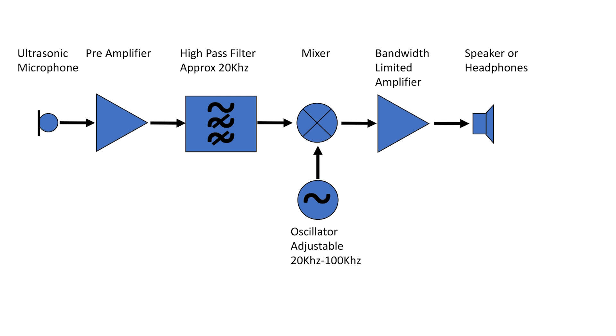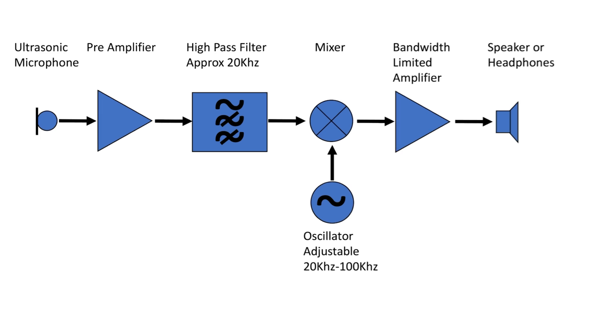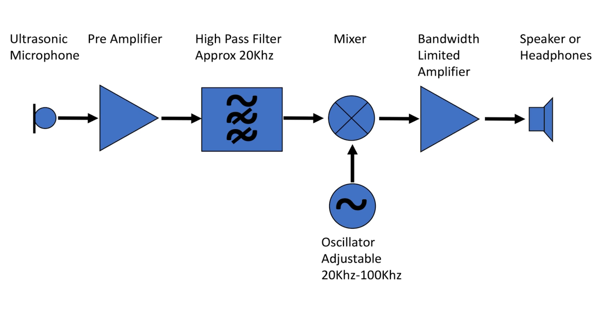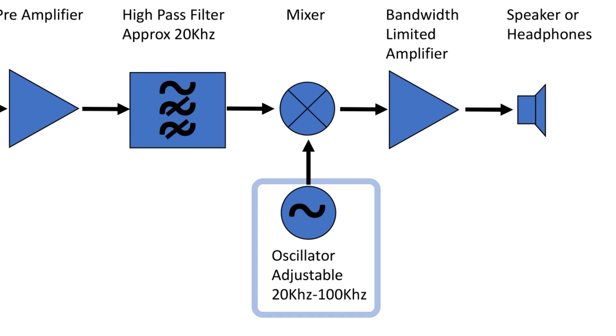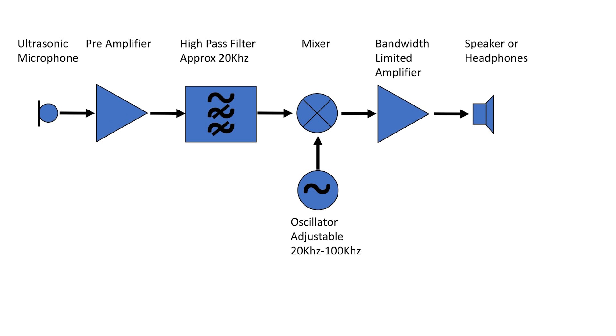So the way a heterodyne receiver works is that we are going to add an extra frequency that we got from our oscillator. The oscillator will be tuned to the frequency we want to listen to. Now the heterodyne principle is that in a mixer, both the input signal from the microphone and our oscillator frequency are mixed together.